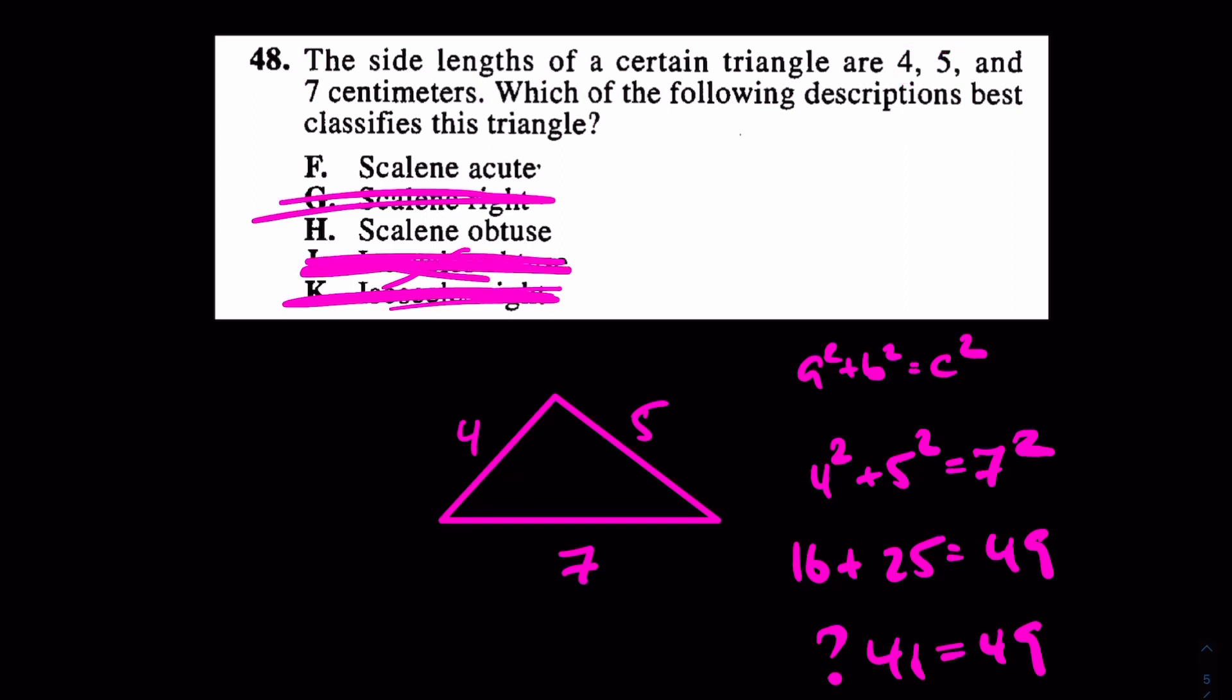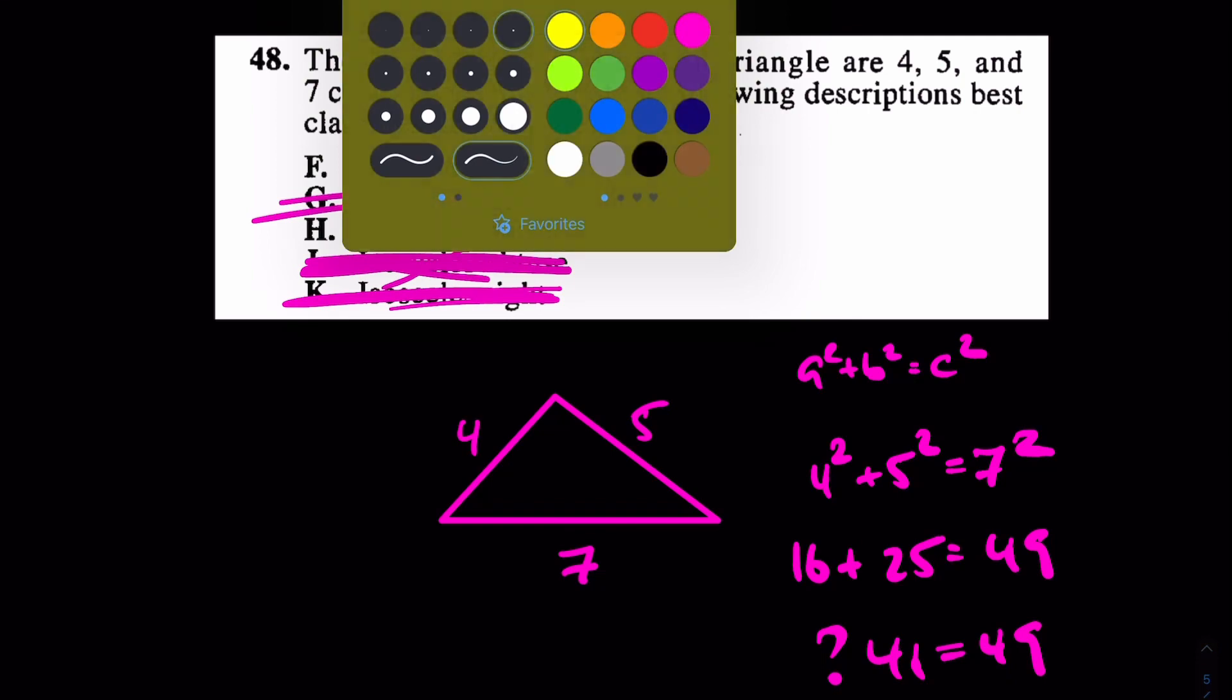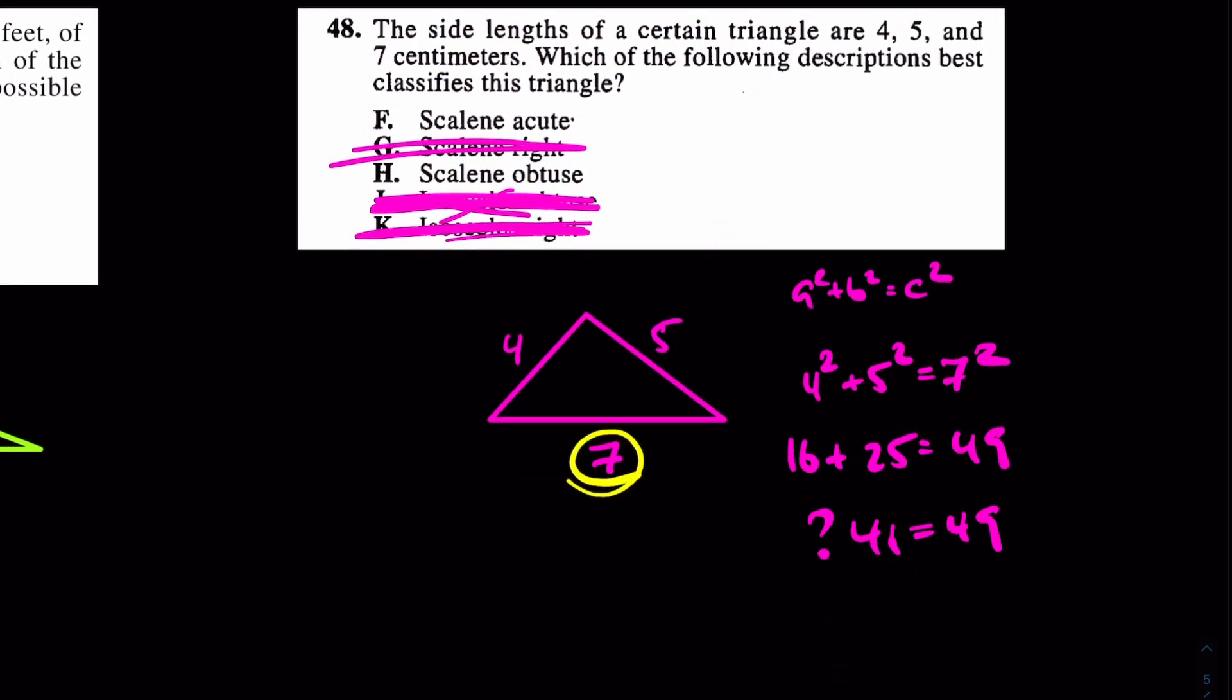So now my question is: is it acute or is it obtuse? Well, now there is a really cool principle here. The principle is: is this hypotenuse too big or is it too small? If it's small—in other words, if these two guys can overtake it—then it's acute. But if these two sides cannot overtake it, in other words if a² + b² is less than c², then it's obtuse. Why? Because it's suggesting that this side, the hypotenuse, the 7, is too big, it's too strong.